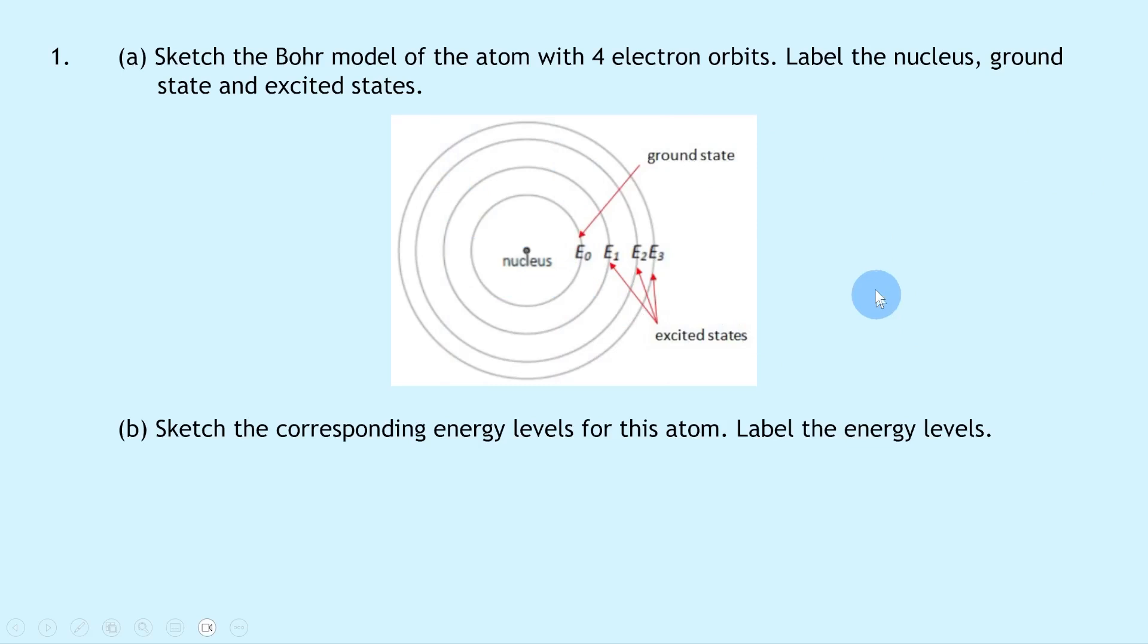The nucleus is drawn as a dot, and then we've got our four circular orbits around the nucleus where we can label the first one as E0, which is the ground state, and then we can label the three outer ones as the excited states E1, E2, and E3.